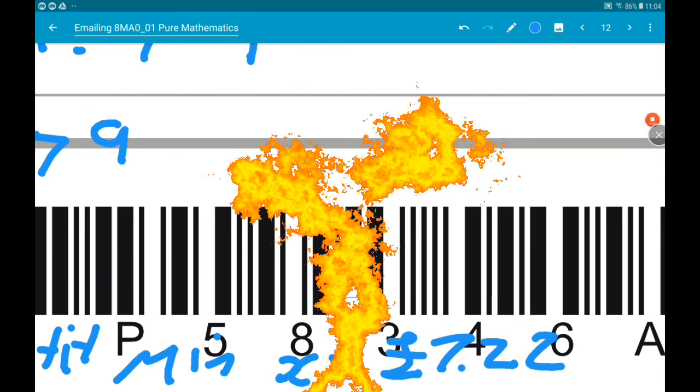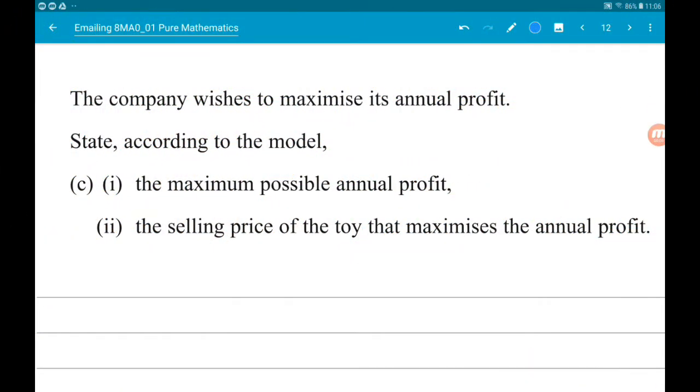Cool. And for part C, we are told the company wishes to maximize their profit. Of course they do. So state, according to the model, part one, the maximum possible annual profit. So you might think there would be no maximum. Just keep sticking the selling price up and you'll make more profit.